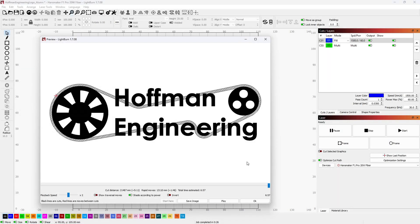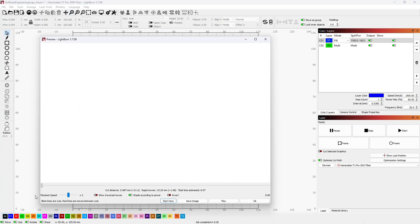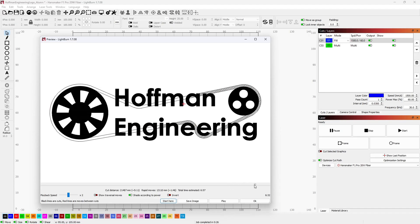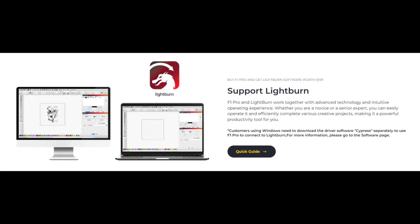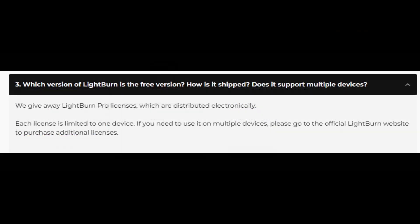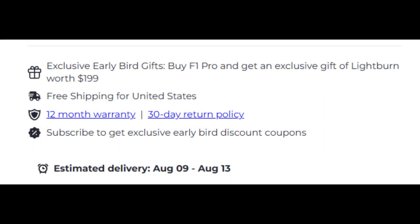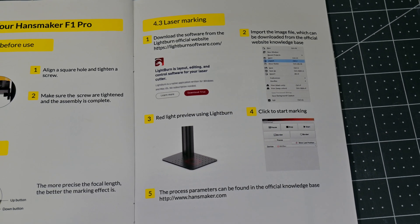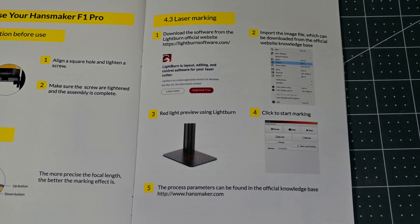Moving to the software side, the F1 Pro is designed to use Lightburn. I love Lightburn, but it does require a license. Thankfully, Handsmaker includes a Lightburn Pro license, which is a $200 US dollar value, with the purchase of the F1 Pro. That's important to note, because they do not include other free software like EasyCAD, and they only have instructions for Lightburn.